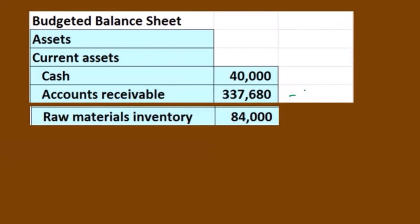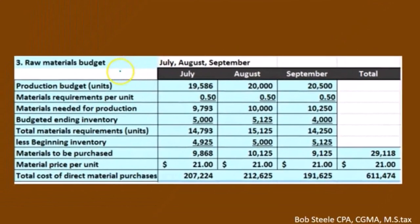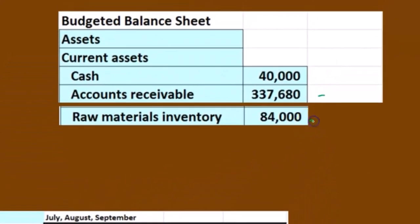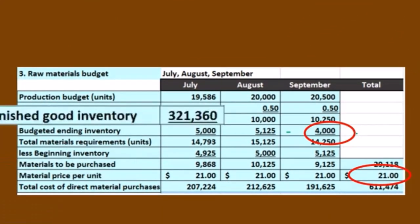Next item: raw materials. We're going to take that from step three in our budgets, the raw materials budget. We're going to take the ending balance in units and multiply it times the $21 per unit price, and that will give us our ending balance of $84,000 in this case. We're looking at where we stand as of the end of the time period, so we take the ending amount — that's what we'll have on the balance sheet.